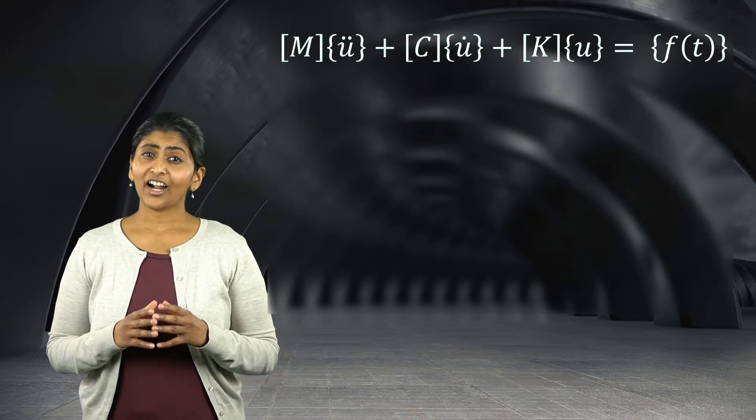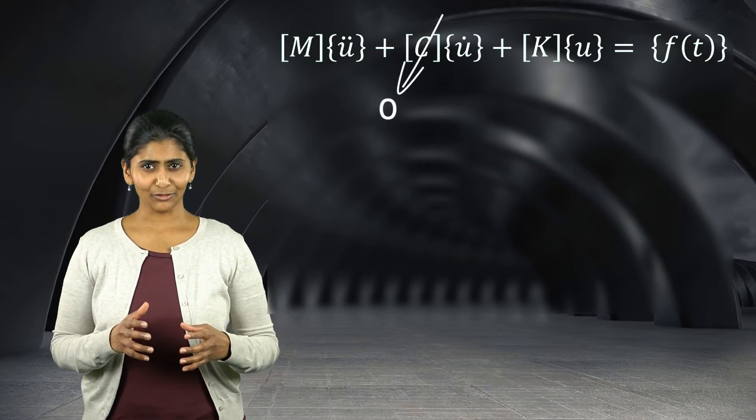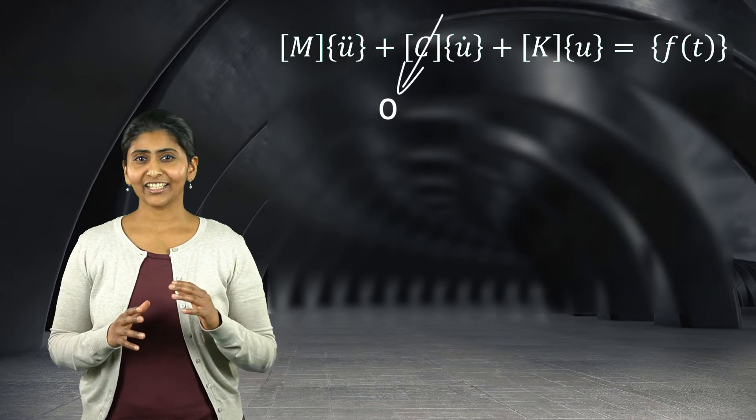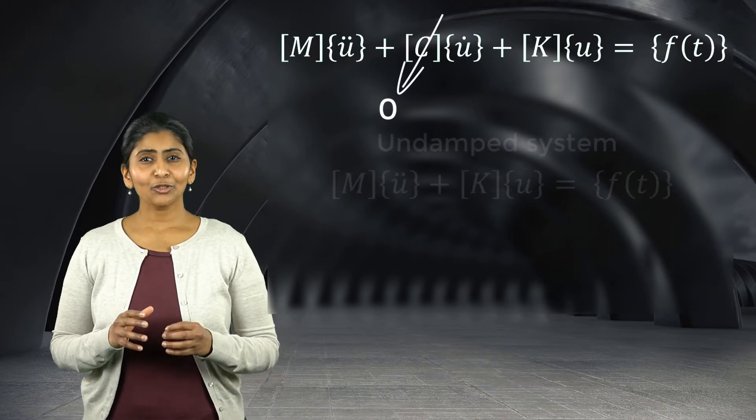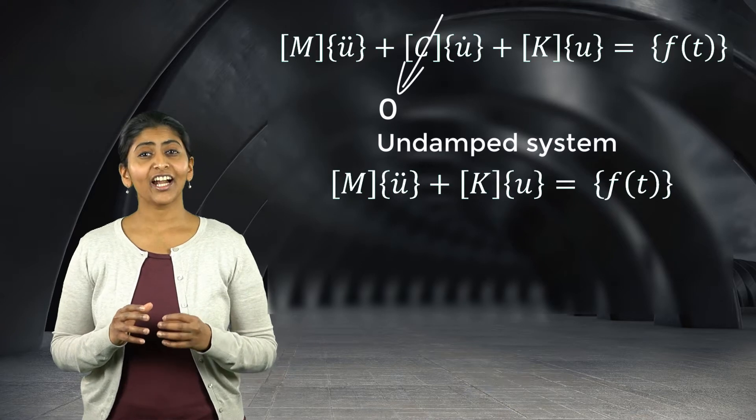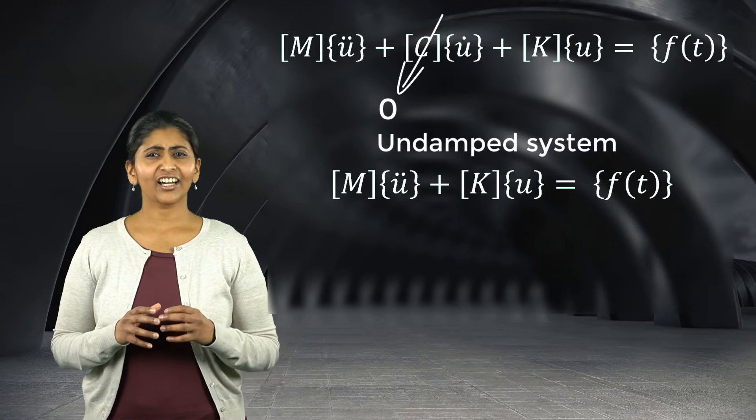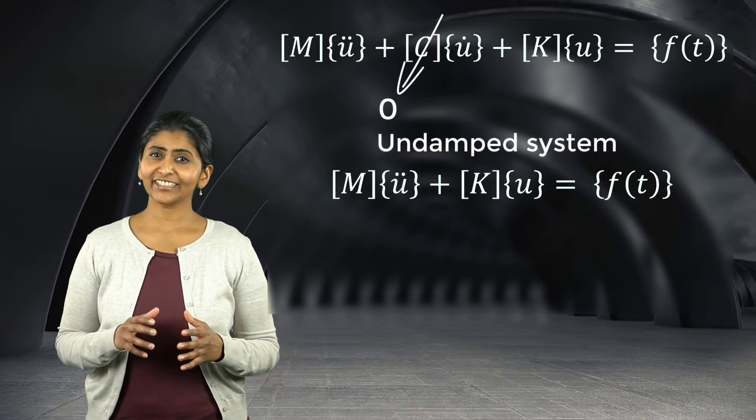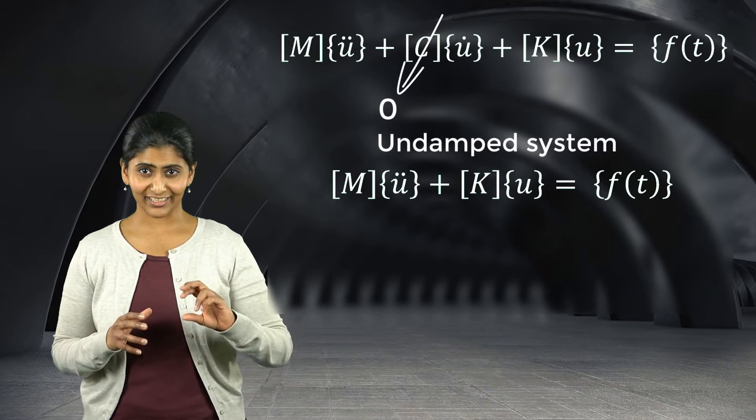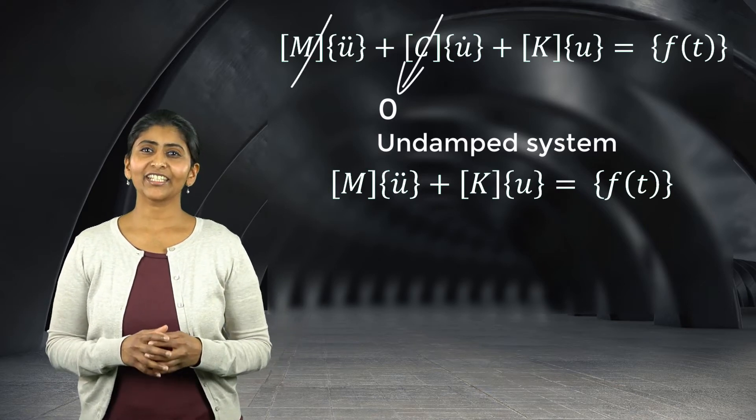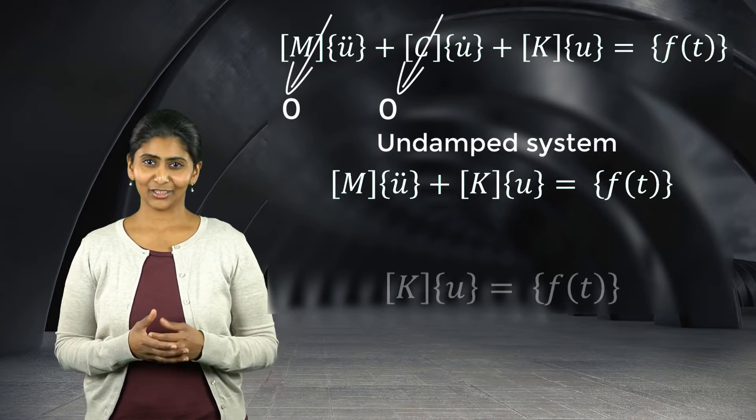In case of un-damped systems, the damping matrix reduces to zero and therefore we can eliminate that term. What we are left with are the equations of motion for an un-damped system. In cases where the inertial effects are negligible, which is generally the case in bolted structures during the preloading stage, the mass term can be neglected, which leaves us with a simplified version of this equation.